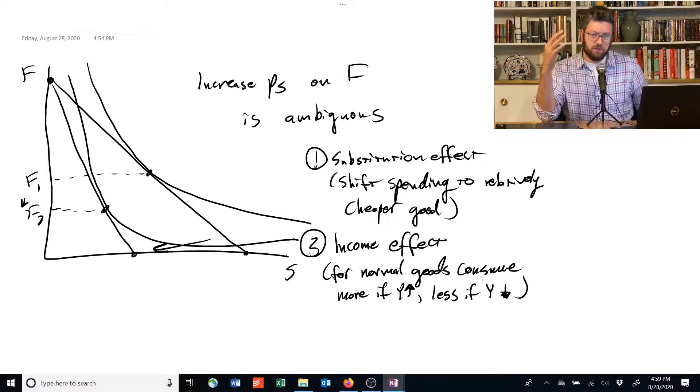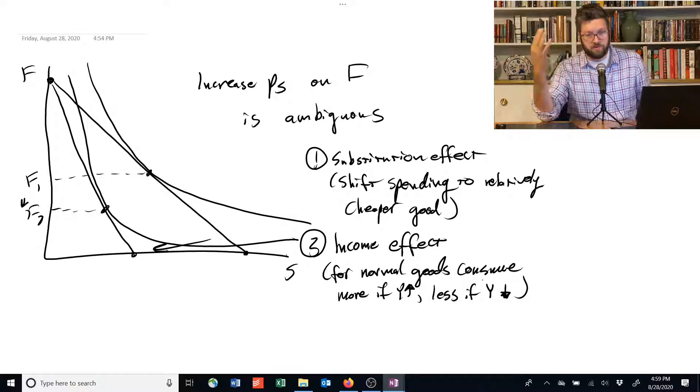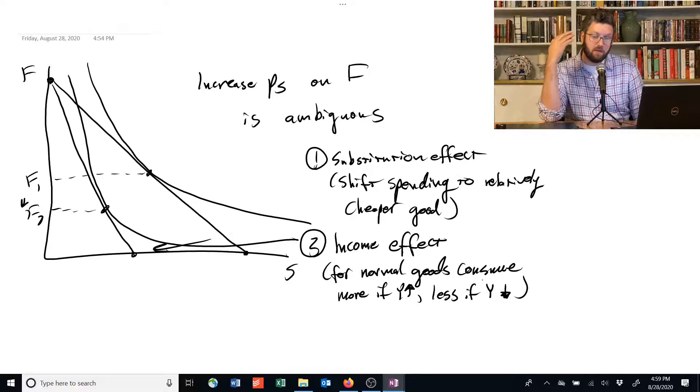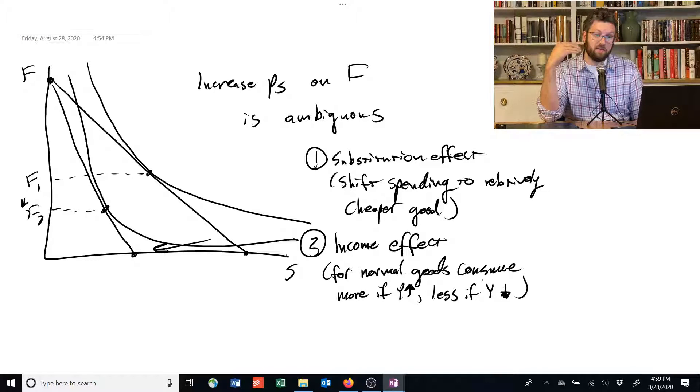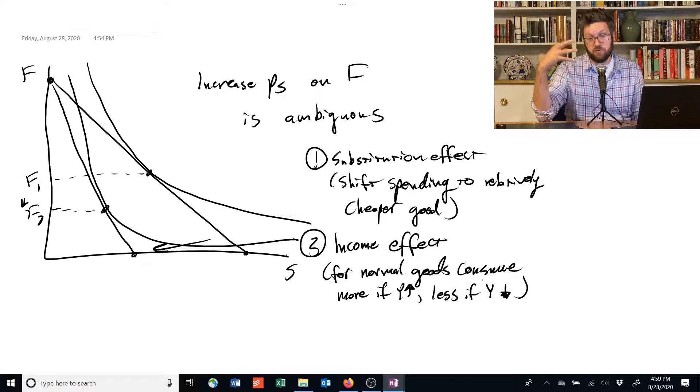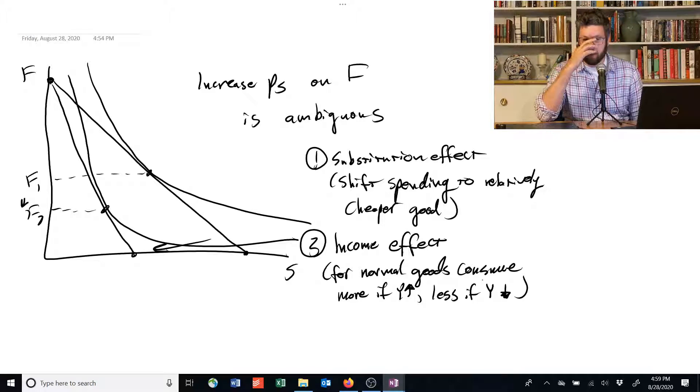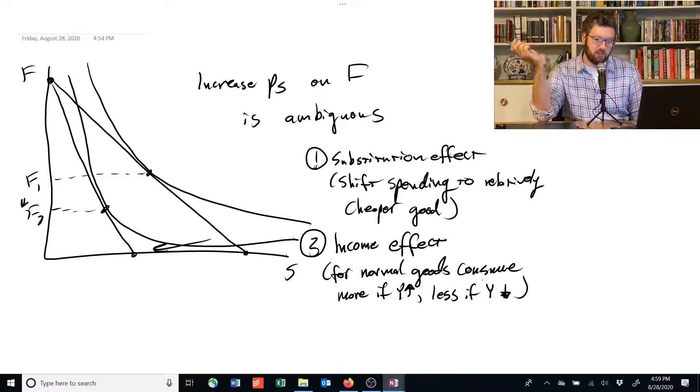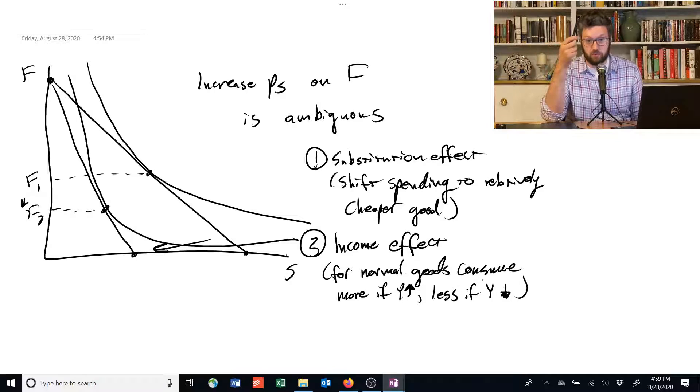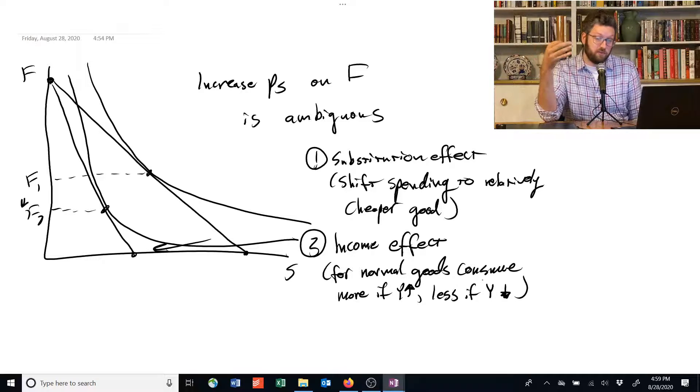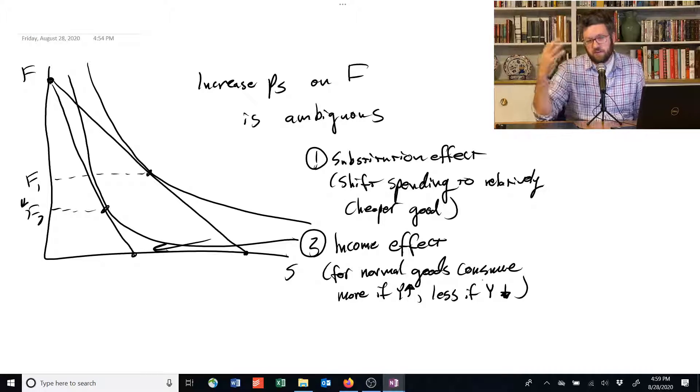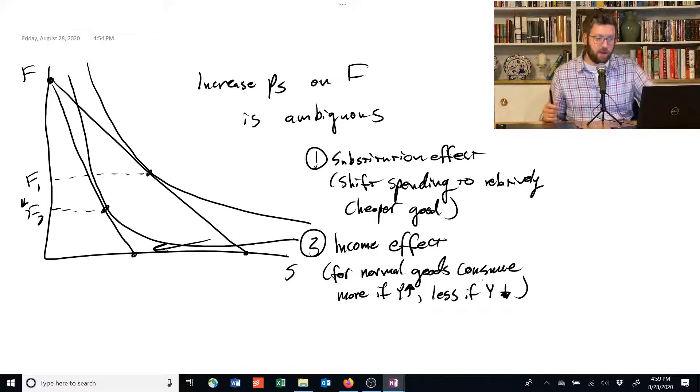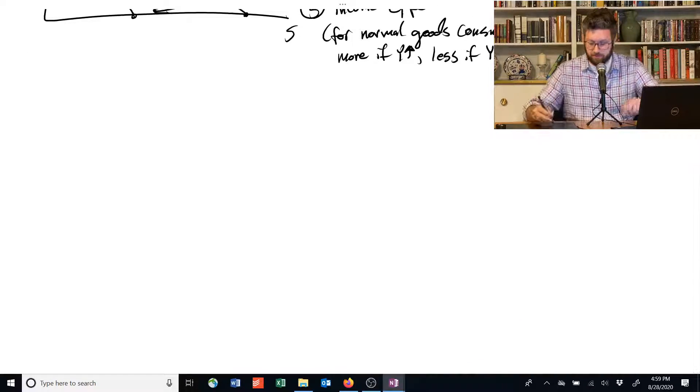So let's do a little diagram to show how those effects vary and how they can kind of lead to the amount of food you desire going up or down. The substitution effect is going to shift food or shift consumption and spending towards food, because it's relatively cheaper. And the income effect is going to shift it away from both goods, because we don't have as much money to spend. And that's going to lead to a reduction in food. And we'll see that either way, like it can go either way. And that's why you get this ambiguous result.